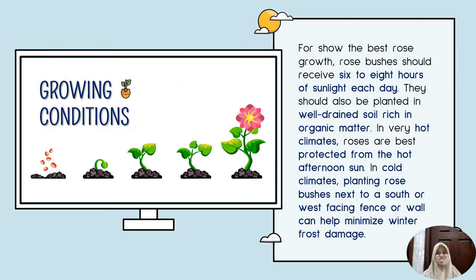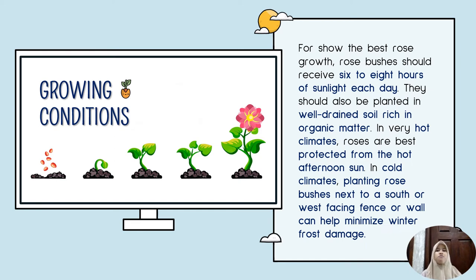The growing conditions of roses. For the best rose growth, rose bushes should receive six to eight hours of sunlight each day. They should also be planted in well-drained soil rich in organic matter. In very hot climates, roses are best protected from the hot afternoon sun. In cold climates, planting rose species next to a south or west facing fence or wall can help minimize winter frost damage.